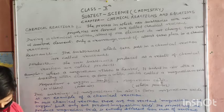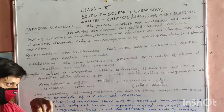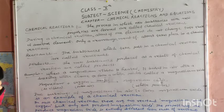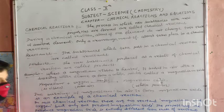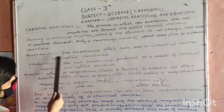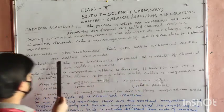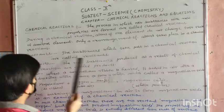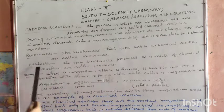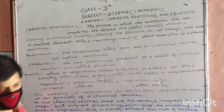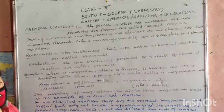When there is any chemical reaction, some chemicals are used up and new substances are produced. The substances that take part in a chemical reaction are called reactants. The new substances produced as a result of chemical reaction are called products.